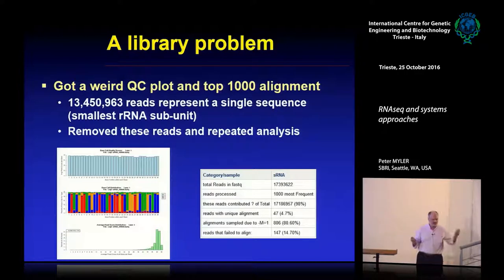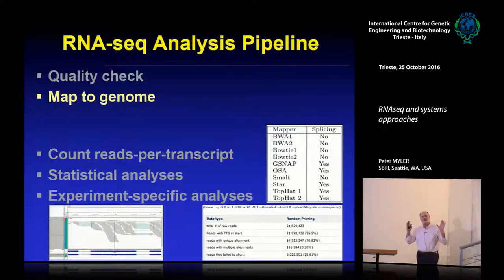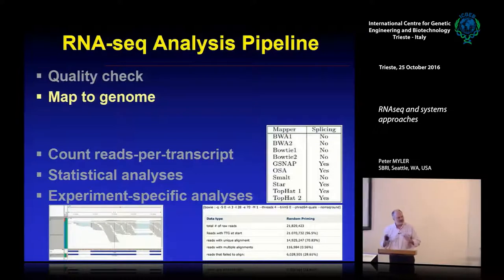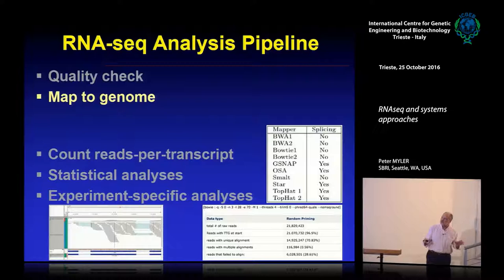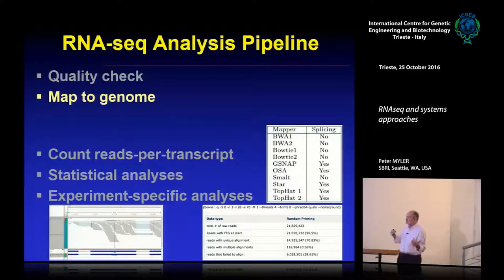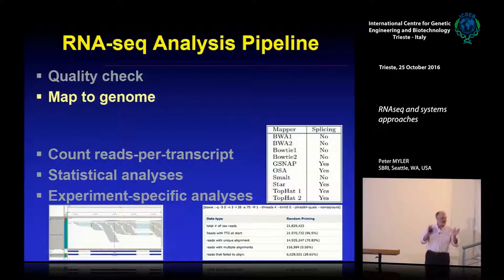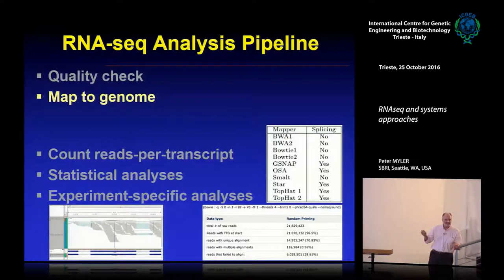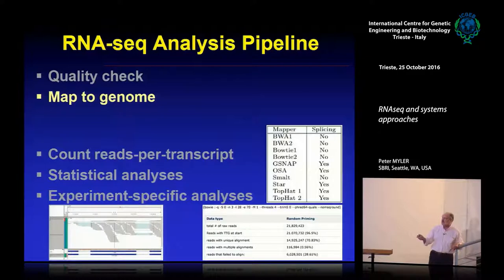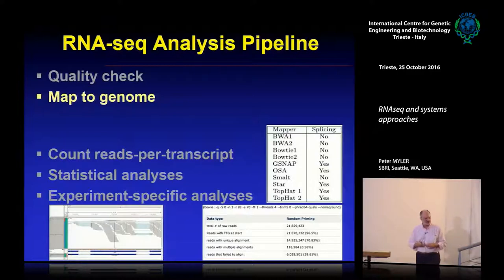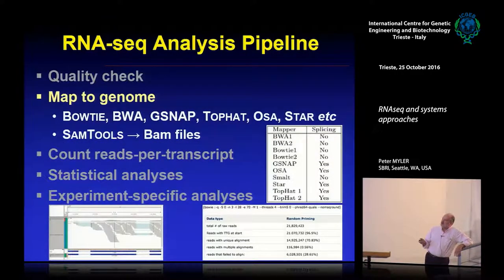Now you're confident your read quality is good and it's worthwhile proceeding — you have to map them to the genome. If you have a reference genome, there are lots of different programs you can use. They all use quick algorithms to find where your sequence maps onto the genome, and they behave more or less the same. Some can deal with splicing and others can't — for Leishmania that doesn't really matter since we only have two splice genes. I happen to like Bowtie 2.